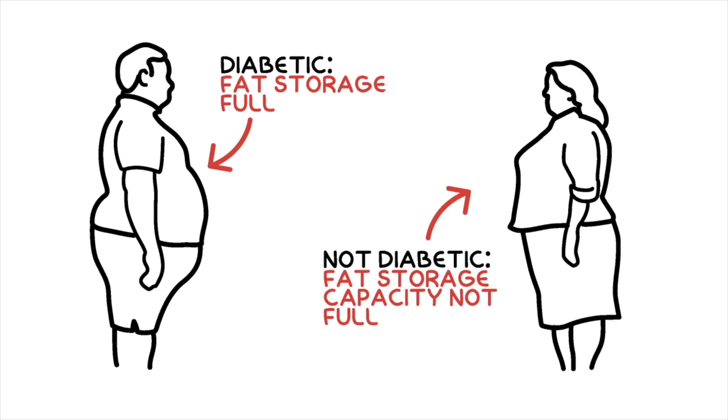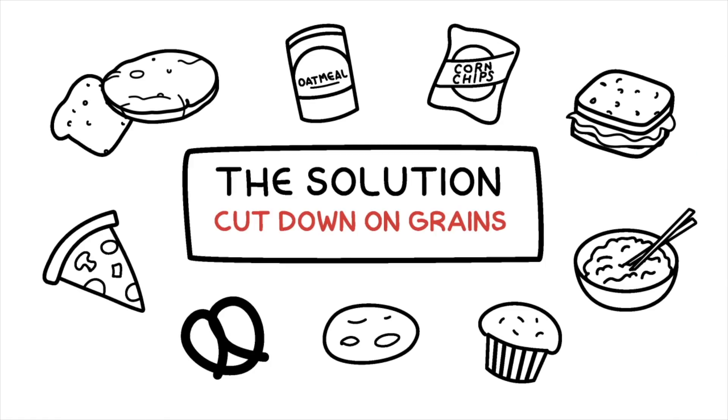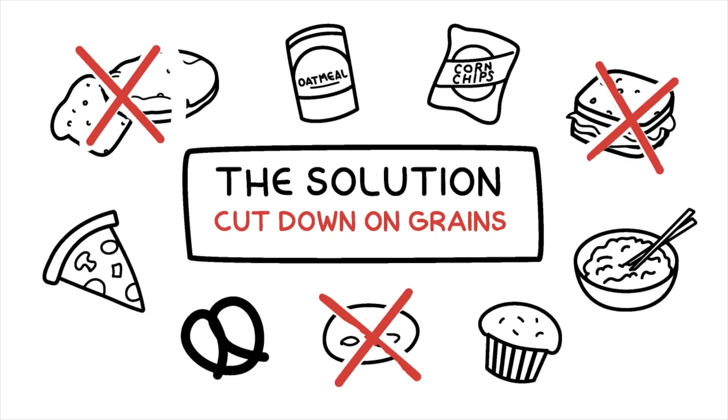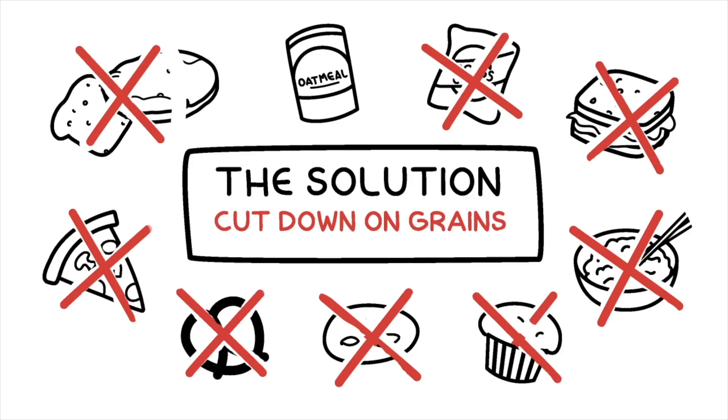So what is the solution? In a word, cut down your consumption of grains. As much as possible, cut out from most of your meals foods like breads, corn and flour tortillas, flatbreads, rice, pizza, snack foods like chips, cakes and cupcakes, muffins and donuts.